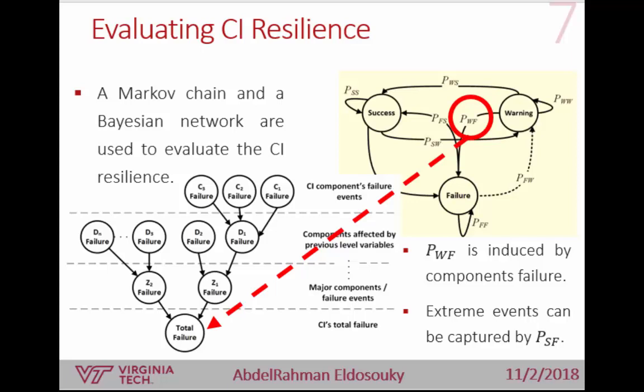We define the Markov chain with these probabilities — success, warning, failure — with three transition probabilities for each state. The warning state is the one we focus on most, because it identifies when there are internal failures that haven't yet caused complete system failure. The probability P_WF is the probability that defines when the system will go to failure when it's in warning state. This is very important in our work: we want internal component failures to not push the system to failure state.